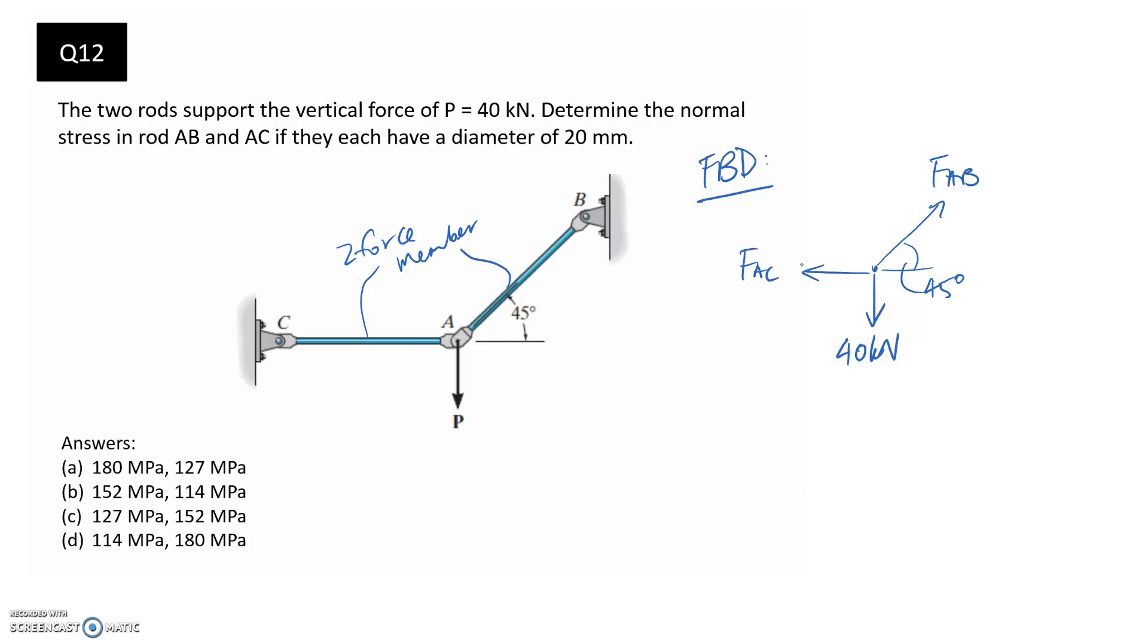Now we should be able to use our equilibrium equations to find those two unknown forces. I'm going to start with summing forces in the y direction to be equal to zero. So we have negative 40 coming down, and we have FAB sine 45 going up. From this, we find that FAB is equal to about 56.6 kilonewtons. And it came out positive, which means the direction was correct.